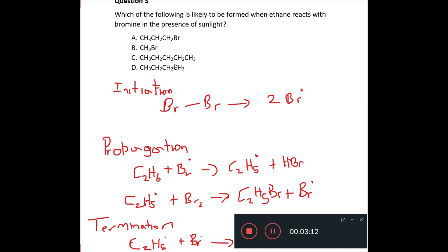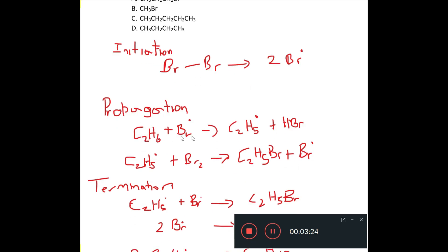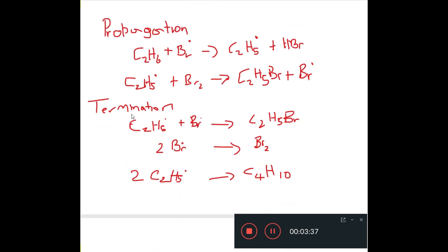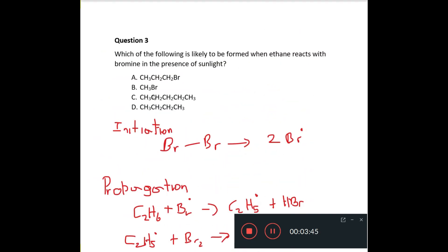In initiation step, the bromine molecule is broken down to produce two bromine radicals. In propagation, you produce the alkyl ion and HBr in the first step and then the bromoalkane and reproduce the bromine radical. And then in the termination stage, the radicals combine to give you different products.